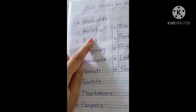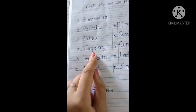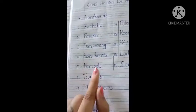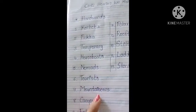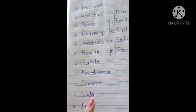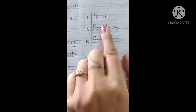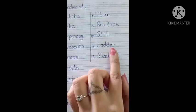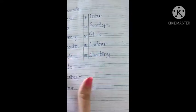Again: Kaccha, Pakka, Temporary, Houseboats, Nomads, Tourists, Mountaineers, Campers, Folded, Igloo, Polar, Rooftops, Stilt, Ladder, Slanting.